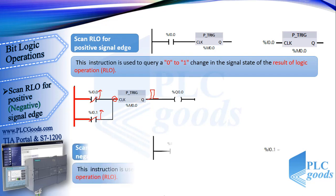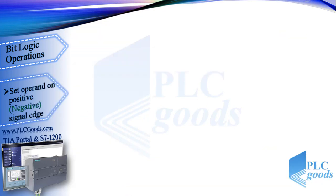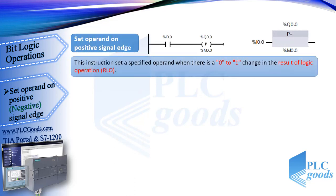There is also an instruction used to query a 1 to 0 change in the signal state of RLO. Let's see the last instruction in this video: set operand on positive or negative signal edge.